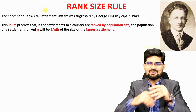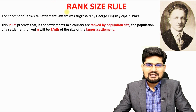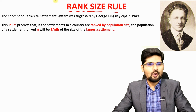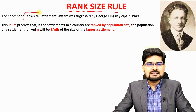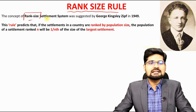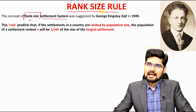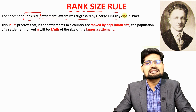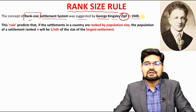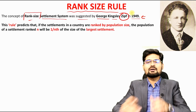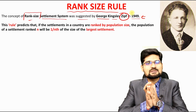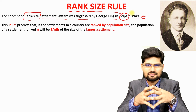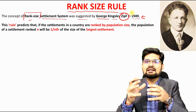Now let's discuss the concept of rank size rule — what is this rule all about? This concept of rank size rule in the settlement system was actually suggested by George Kingsley Zipf in 1949. Remember, in 1939 the concept of primate city came, proposed by Mark Jefferson.